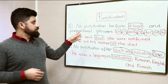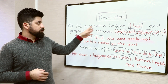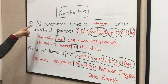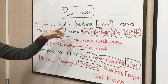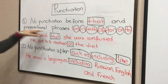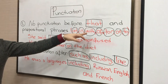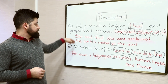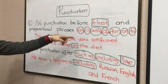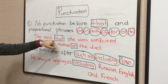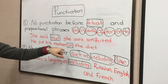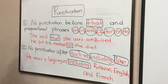We have two straightforward rules that cover all punctuation. The first rule is: never use any punctuation before 'that' and prepositional phrases with 'at,' 'in,' 'with,' 'off,' 'for,' 'on,' 'to.' For example: 'She said that she was confused' — there is no punctuation before 'that.' And 'He put his mother on the diet' — there is no punctuation before 'on.'